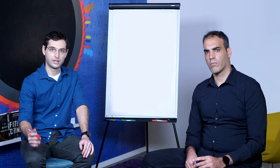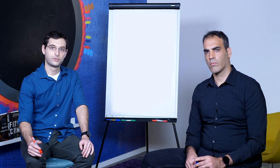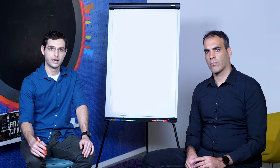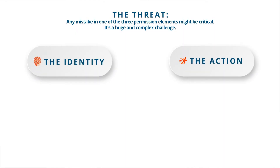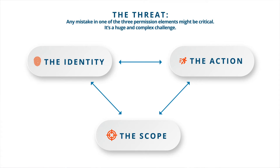Permission assignments, in general, are built from three main elements. These are the identities that get the permission, the actions that are being permitted, and the resource or resources that the actions are approved on. A simple mistake in one of these three elements could lead to a privilege escalation and unintended access or control to cloud resources or assets.